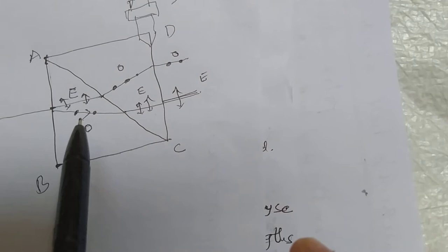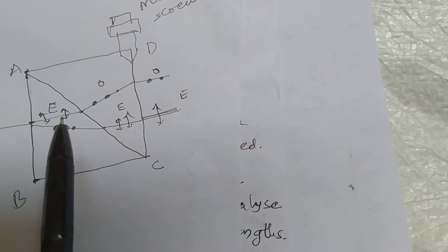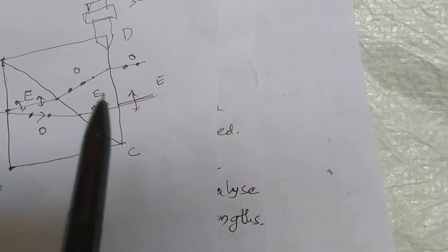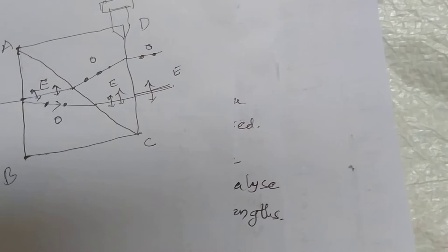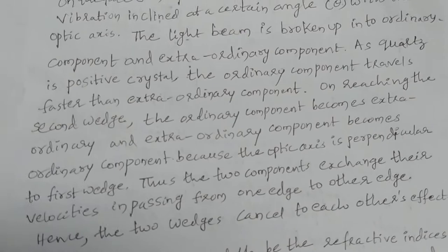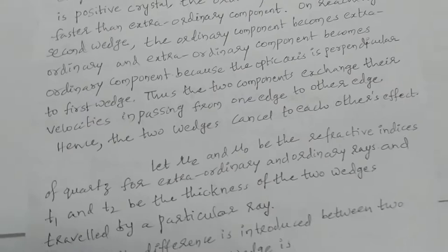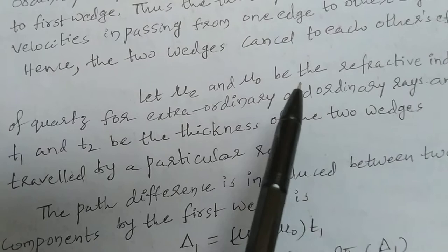The ordinary component obeys the laws of refraction while the extraordinary component does not obey the laws of refraction. The velocity of the extraordinary component is greater than the velocity of the ordinary component. When these two components reach the second wedge, the extraordinary component becomes ordinary and the ordinary component becomes extraordinary. After emerging from the second wedge, the two components are parallel to each other because the optic axes of both wedges are perpendicular to each other, and the two wedges cancel each other's effect.